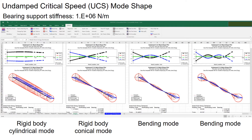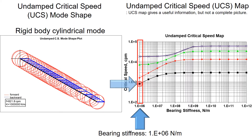The first two are the rigid body modes and the rest are the bending modes. The first critical mode shape is the rigid body cylindrical mode, also called bounce mode. As you can see in the figure, the motion at each end of the shaft is in phase.